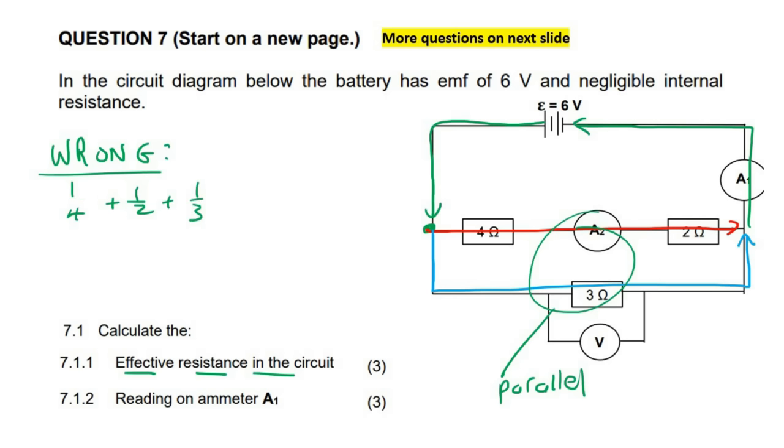You first have to combine these two together because they are in series. And that's gonna give you 6 ohms. So this branch here is 6 ohms.